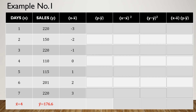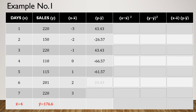For y minus y-bar, we take each sales value and subtract the average of 176.6. So 220 minus 176.6 gives 43.43; the second row gives negative 26.57; the third gives 43.43. It is better if you join in solving this problem to practice computing x minus x-bar, y minus y-bar, and the rest of the computation. The remaining values are: negative 66.57, negative 621.57, 24.43, and 43.43.